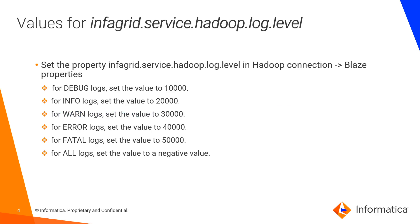The value for infagrid.service.hadoop.log.level is as below. If we have to enable debug logs, then we have to set the value as 10,000. And if we have to set info logs, then we have to set the value as 20,000. You can refer to this slide to set the respective log levels.